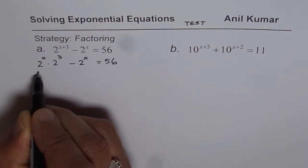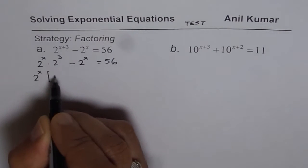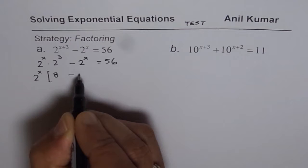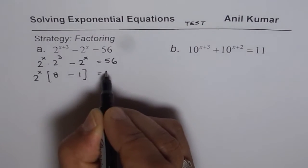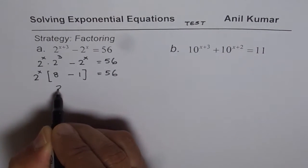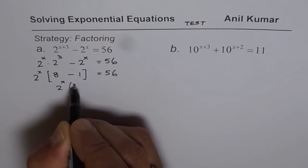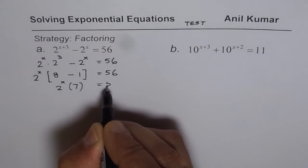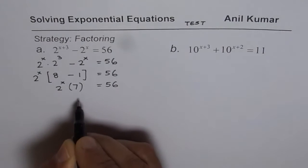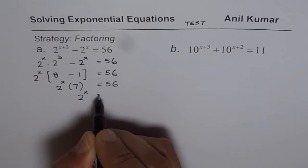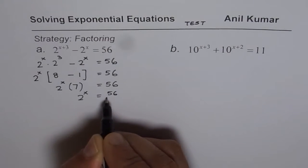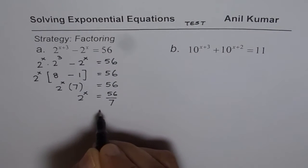Now 2 to the power of x is common and we have here 8 minus 1 equals 56. 8 minus 1 is 7, so we can write this as 2 to the power of x times 7 equals 56. Now divide by 7, so we get 2 to the power of x equals 56 divided by 7 which is equal to 8.